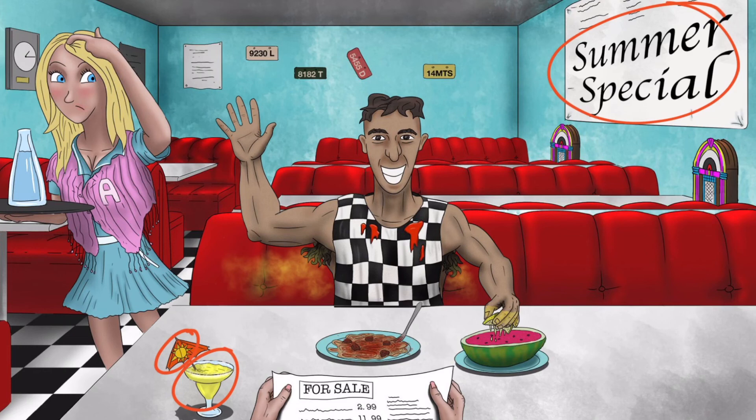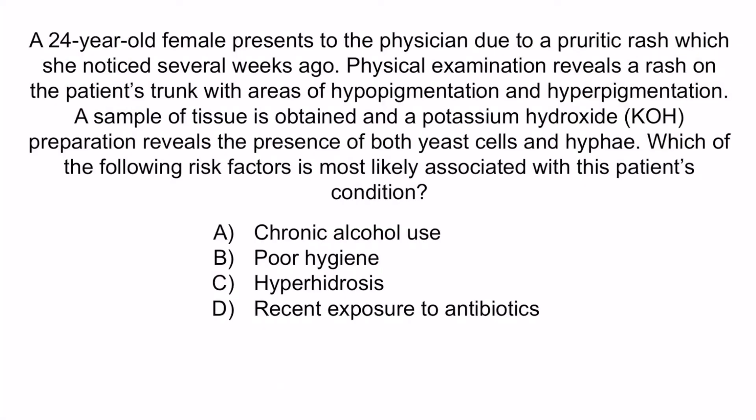Based on this information, you should have been able to deduce that if a patient has hyperhidrosis, then this would be similar to a hot and humid environment in the summer, which would increase the risk of developing this infection. Under hot and humid conditions, the yeast form is converted to the pathogenic mycelial form, which can then cause disease. A, B, and D are not known risk factors for developing tinea versicolor.